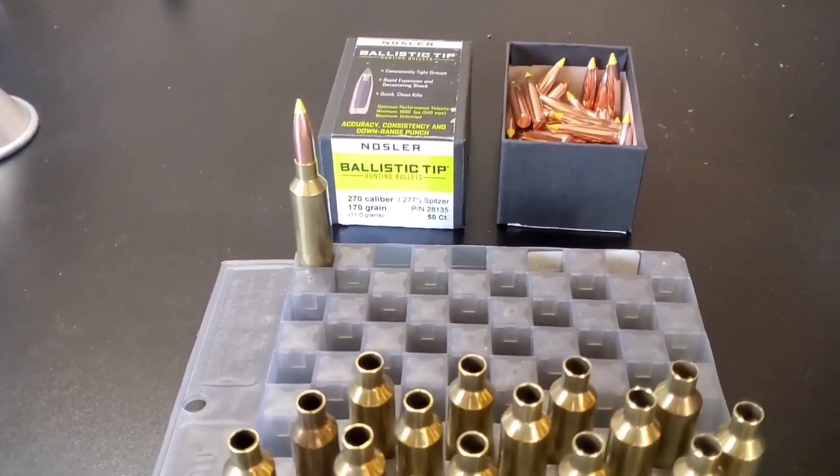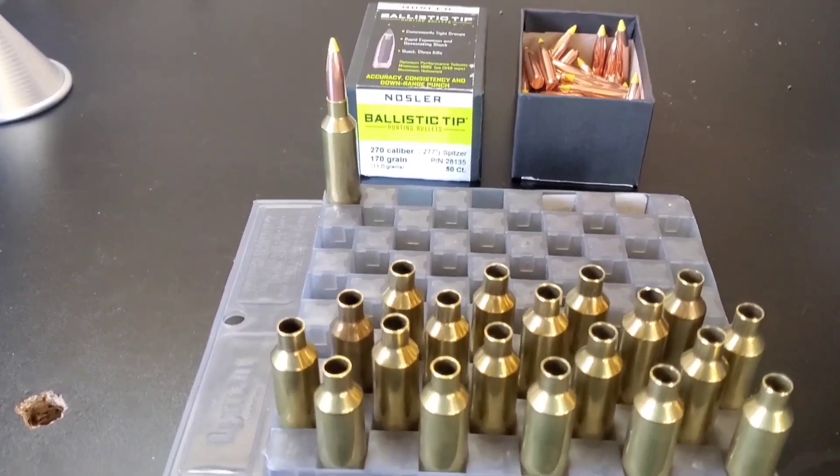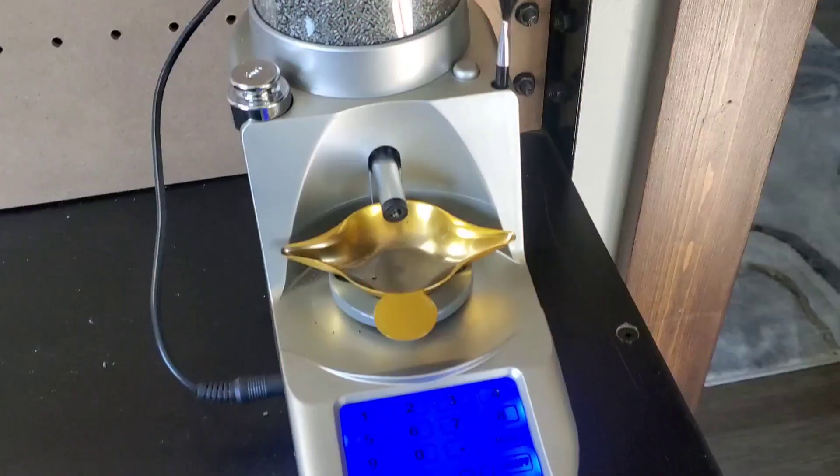Good morning everyone. Let's finish loading some 6.8 Western ammo, but this time with the new bullet - this is the Nosler 170 grain ballistic tip. At a later video, I will report back on how these bullets do in my rifle with a more in-depth load review for anybody wanting to run the Nosler bullets. This video is just going to focus on how I throw a charge, seat the bullet, and check the concentricity.